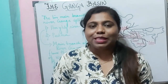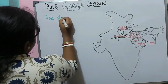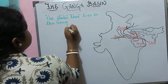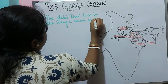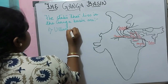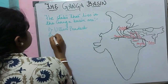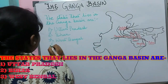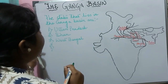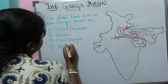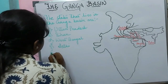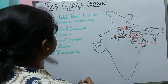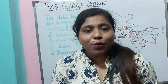Now let us know about the states that lie in the Ganga Basin. The main states are Uttar Pradesh, Bihar, and West Bengal — these are the three main states through which the Ganga river flows. It also flows through Delhi, as the tributary Yamuna flows through Delhi, and through Jharkhand, where the Ganga tributary Punpun river flows.